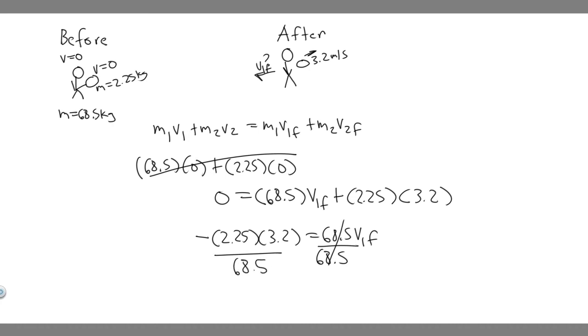And this right here is going to give you V1 final. So if you go ahead and do this, minus 2.25 multiplied by 3.2 divided by 68.5, you're going to get V1 final, or essentially the velocity. The final velocity of our astronaut is going to be minus 0.105.